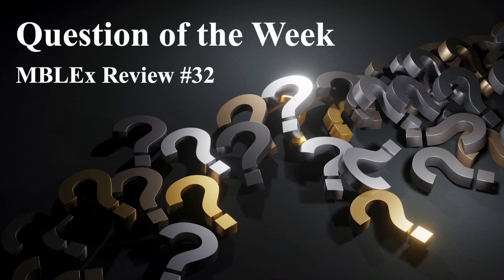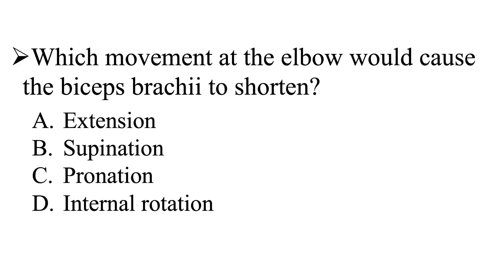Question of the week in lecture review number 32. Our question is: which movement at the elbow would cause the biceps brachii to shorten? Is it going to be A, extension; B, supination; C, pronation; or D, internal rotation?